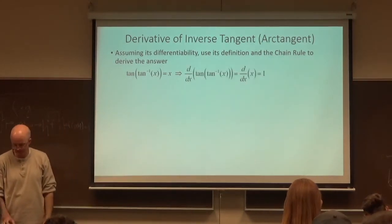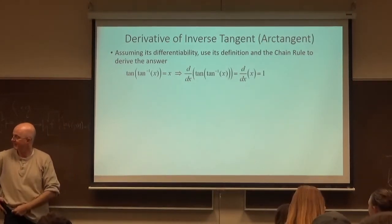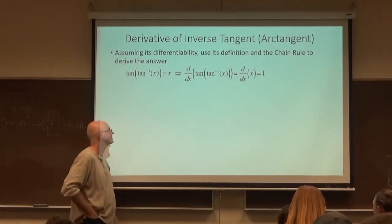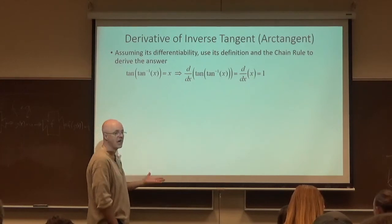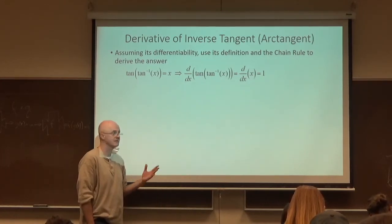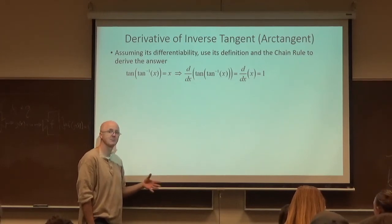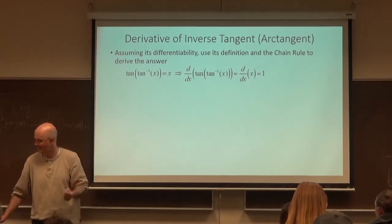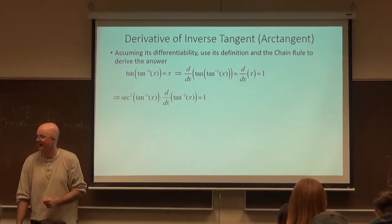Differentiate both sides once again. Once again, the derivative of the right side is just a 1. For the left side, use the chain rule. Derivative of tangent. Plug in the inverse tangent into that derivative. Then multiply times the derivative of inverse tangent, which we don't yet know. But we can still write it symbolically.